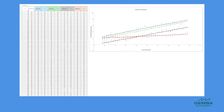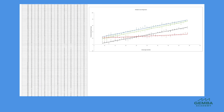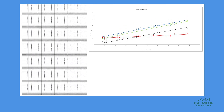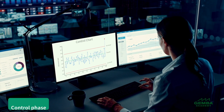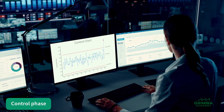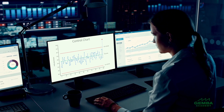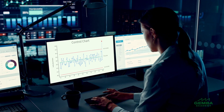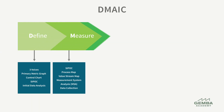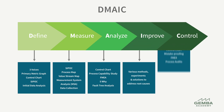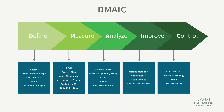In the improve phase of DMAIC, we often use statistical models to validate the efficacy of proposed solutions, ensuring that process improvements are data-driven rather than based on assumptions. Finally, in the control phase of DMAIC, we rely heavily on SPC to monitor the process continually and ensure that improvements are sustained over time. SPC provides the data-driven backbone to the DMAIC process, enabling organizations to make informed decisions, implement lasting improvements, and maintain optimized processes.